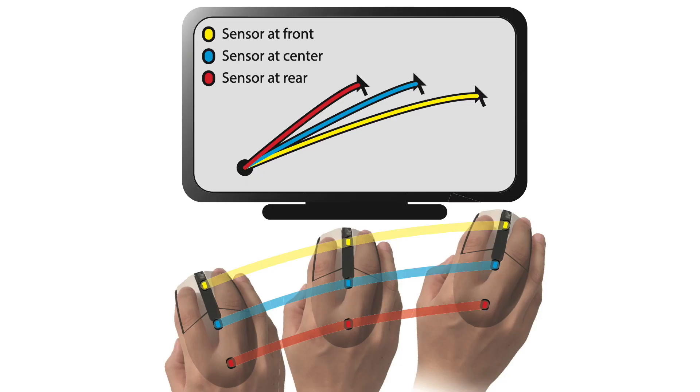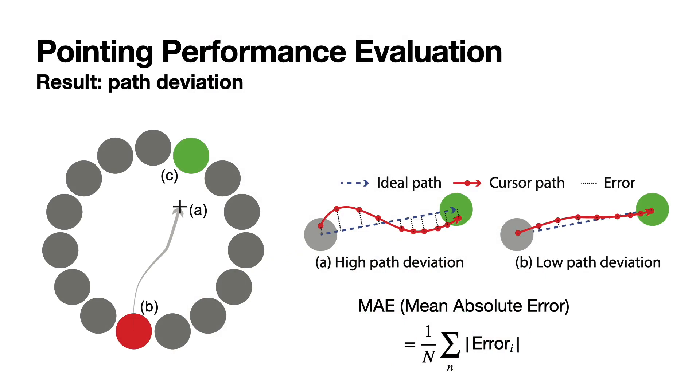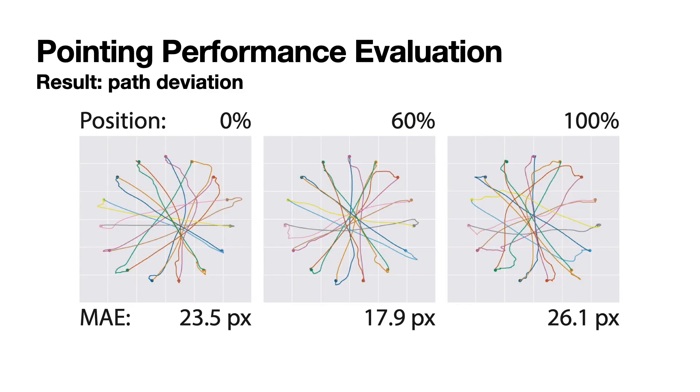Because different sensor positions generate different paths, we hypothesize the performance degradation is mainly because of the path deviation. We measure the path error between the ideal and the actually performed paths. For example, the left and right pictures are the path with the higher deviation, and the center one is the path with low path deviation.